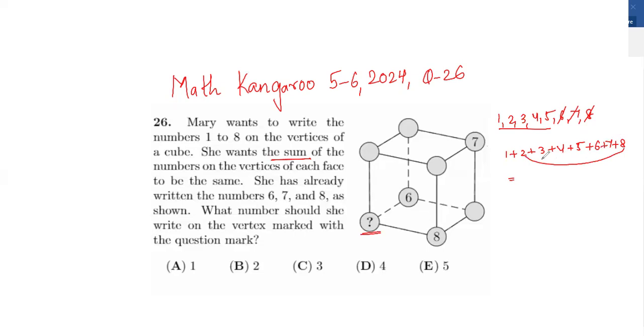Whenever we have these numbers, just try making 10 so that you can calculate faster. So 8 plus 2 is 10, 20, 30, and this is 36. So all these numbers are adding up to 36.